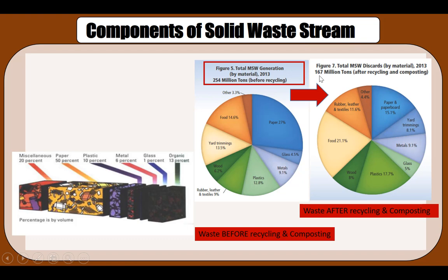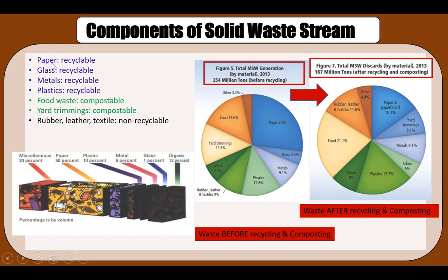After recycling, the amount is reduced to 167 million tons through recycling and composting. But still in this 167 million tons we can see a lot of materials such as paper and paperboard, yard trimmings, metals, plastics, wood, and food products that potentially could be recycled but are actually going into the landfill. Paper, glass, metals, and plastics are all recyclable; food waste and yard trimmings are compostable; and the non-recyclable, non-compostable components are typically rubber, leather, and textile.